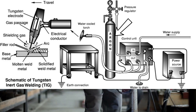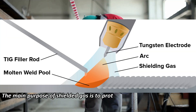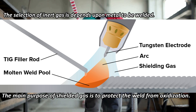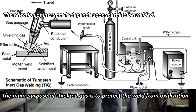Normally argon or other inert gases are used as shielding gas. The main purpose of the shielding gas is to protect the weld from oxidization — it does not allow oxygen or other air into the welded zone. The selection of inert gas depends upon the metal to be welded. There is a system which regulates the flow of shielding gas into the welded zone.